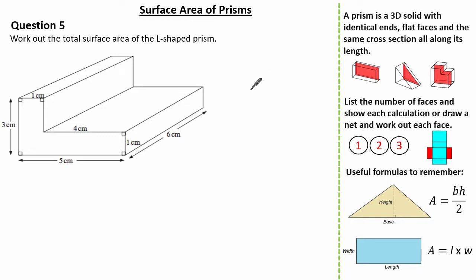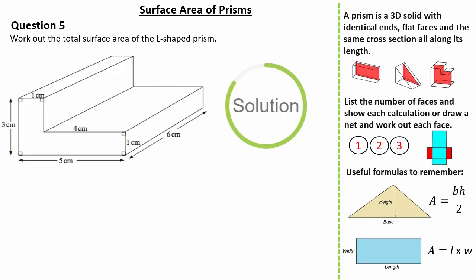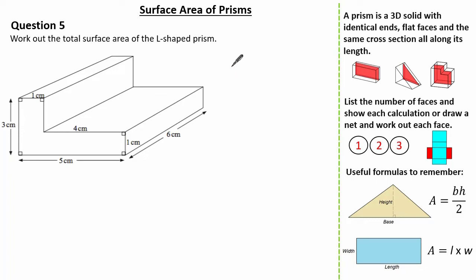Now let's look at a slightly harder question — working out the total surface area of this L-shaped prism. This question is a little harder, so I'm going to list all the faces systematically. Counting the faces: 1, 2, 3, 4, 5, 6, 7, and 8 — so we have 8 different faces to calculate.